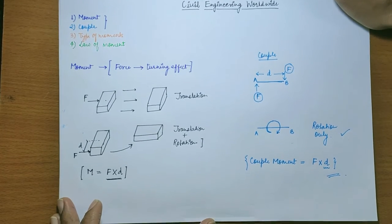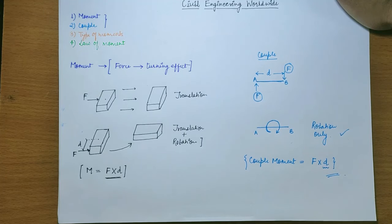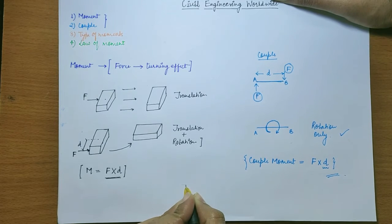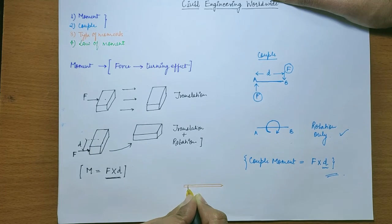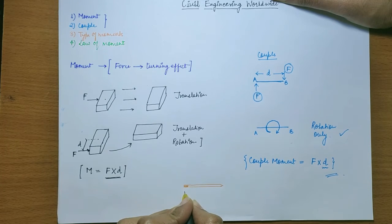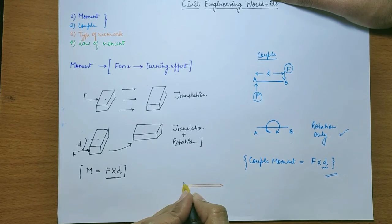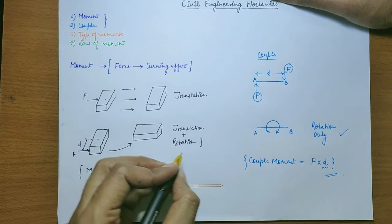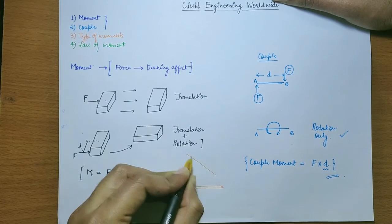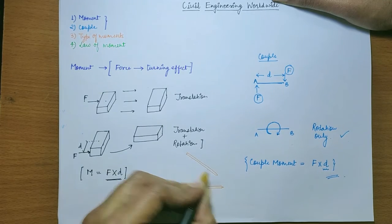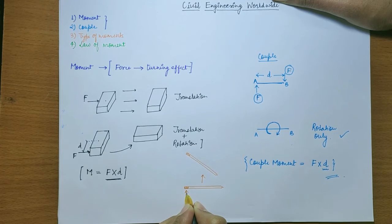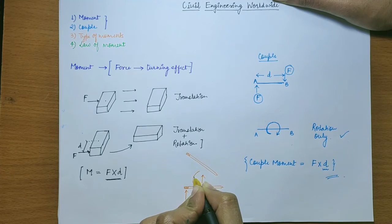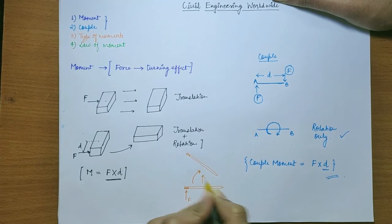To be more clear on this couple and moment difference, let us take an example of a pencil. Suppose this is a pencil lying on a table and if we just apply a force F here, the final position of the pencil will be somewhat like this. Here, it has moved forward in the direction of the force acting on it and has also rotated because of the moment. So this is the final position of the pencil.